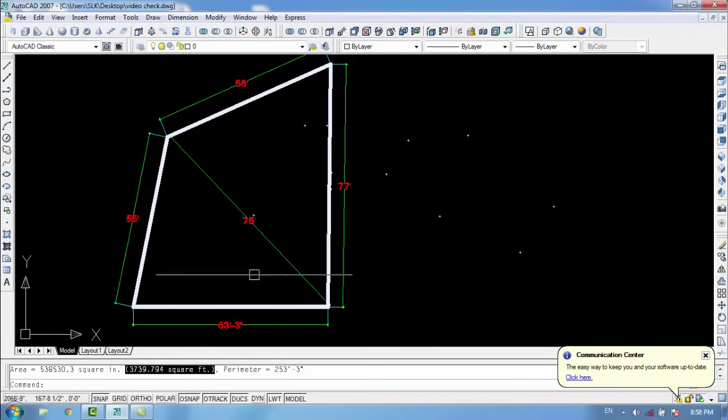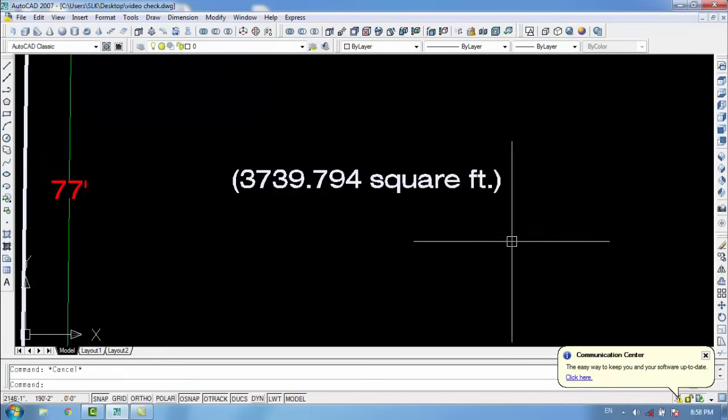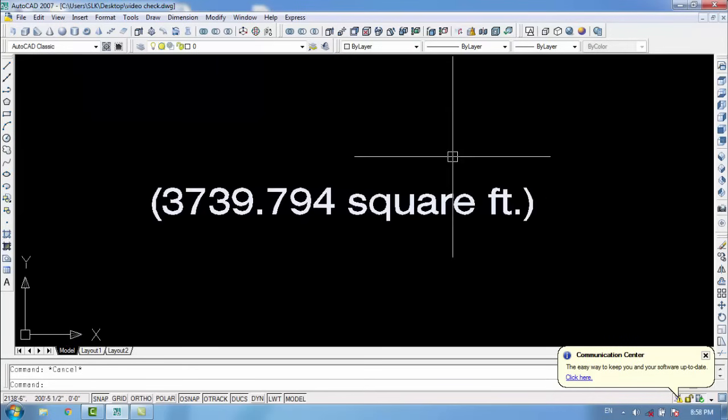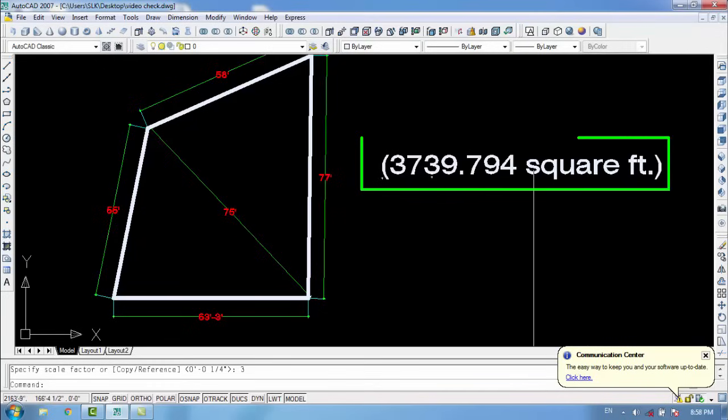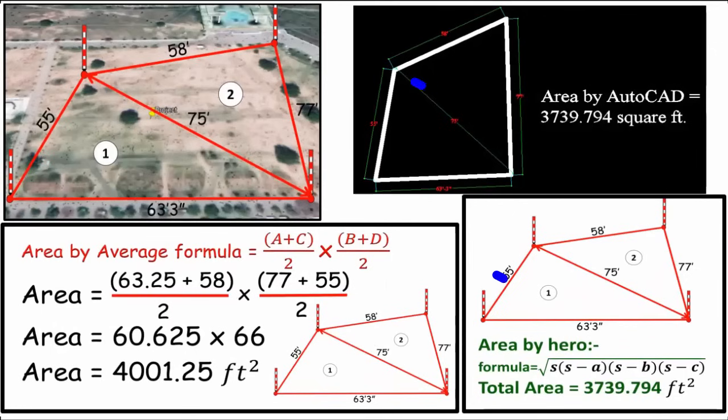According to the software, AutoCAD, the total area of the plot or property is 3739.794 square feet. Now let's decide which formula or method is okay. Of course, the last method, area by Hero formula, is okay. So next time please do not use these sorts of formulas because the difference is very huge.